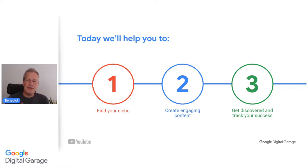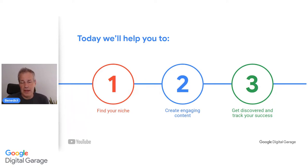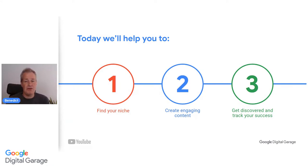The big thing is finding your niche — what are you passionate about and who is your audience? Who is your audience? Very important. Then the second area is creating good content — we'll look at the steps to take when planning and shooting, and some tips along the way. And then, of course, get found, get started, and track your success — whether that be creating a channel for fun or to potentially create a revenue stream, we will look at how you get your channel seen.